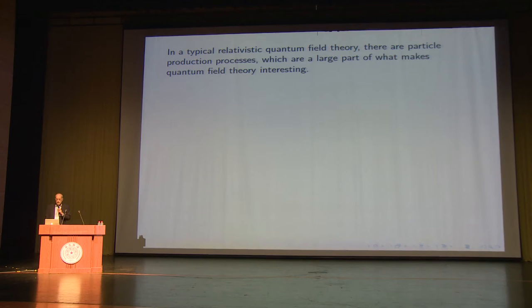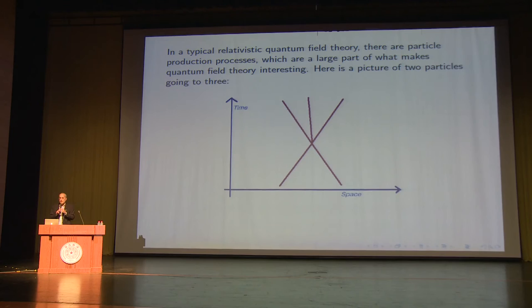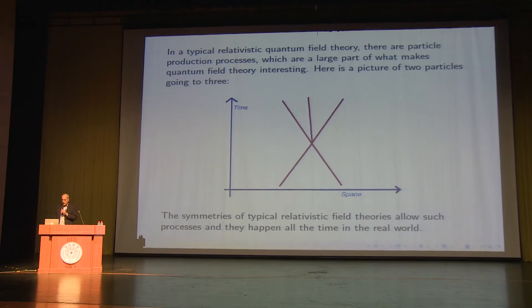In a typical relativistic quantum field theory, there are particle production processes, which are a large part of what makes quantum field theory interesting, and also a large part of what makes quantum field theory rich enough to describe the real world. Here I've drawn a picture of two particles going to three, and again ignoring time delays, but macroscopically the outgoing particles are represented by three lines in space-time that all come from a common source, to within a microscopic error that depends on the masses of the particles and the ranges of the forces. The symmetries of typical relativistic field theories allow such processes.